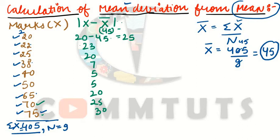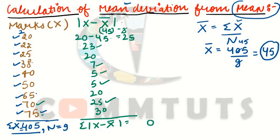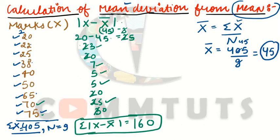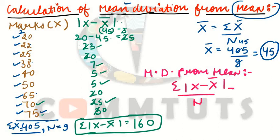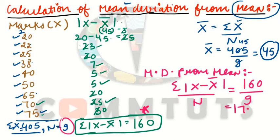The third step is to find the total: summation |x − x-bar|. Adding all the absolute deviations gives summation |x − x-bar| = 160. Then mean deviation from mean equals summation |x − x-bar| divided by n, which is 160 divided by 9, giving mean deviation from mean = 17.78.